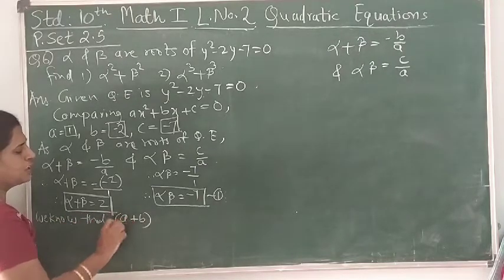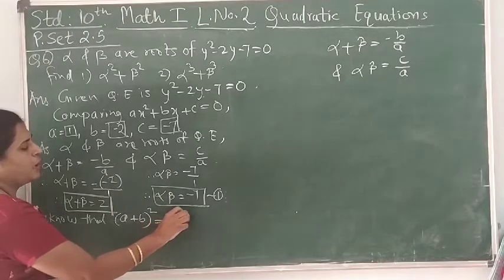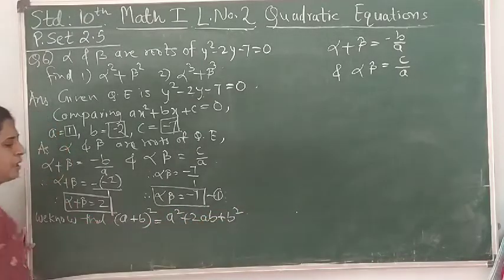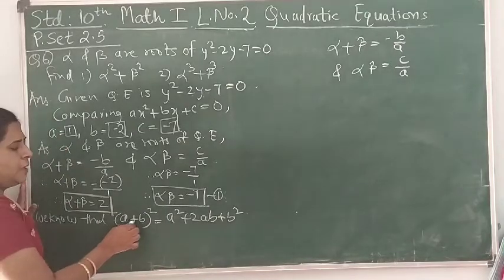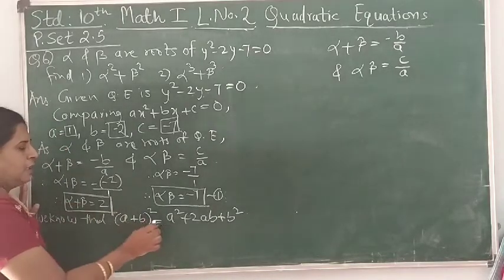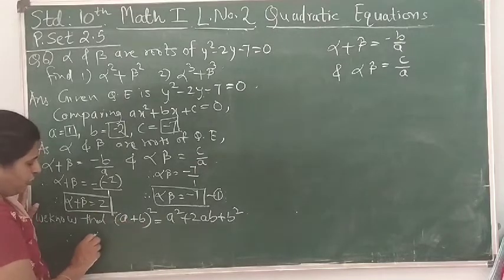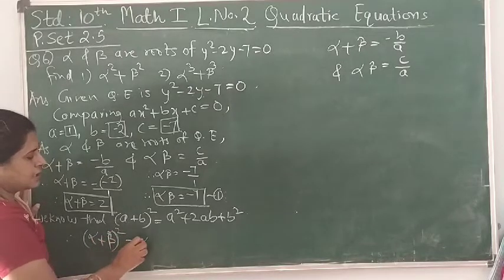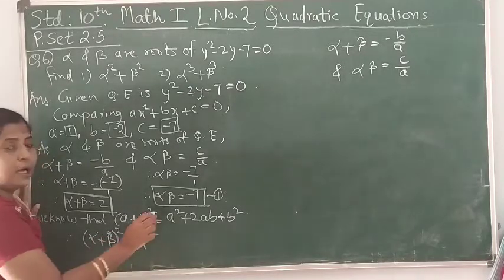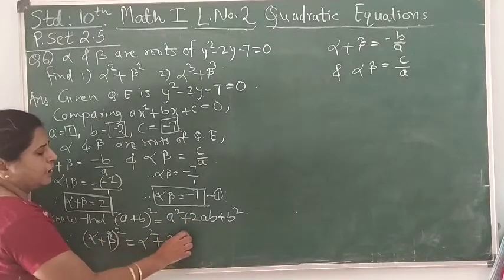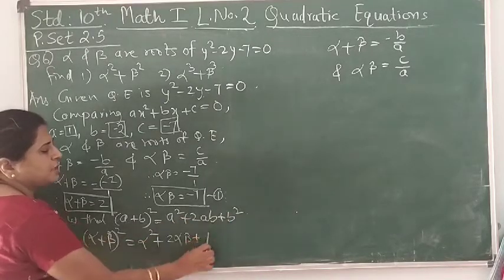Replacing a and b with α and β, we get (α + β)² = α² + 2αβ + β². We know the value of α + β, so we can square it. We need to find α² + β², and we know αβ so we can compute 2αβ.